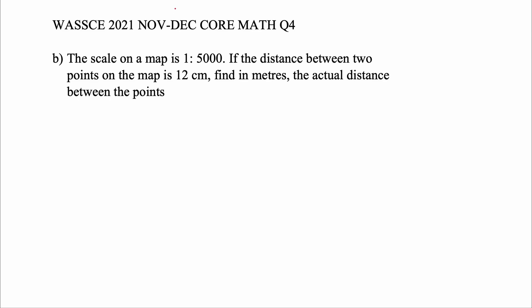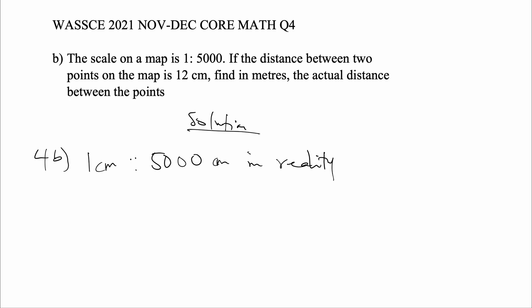The scale on a map is 1 to 5000. If the distance between two points on the map is 12 centimeters, find in meters the actual distance between the points. So on the map, 1 centimeter is equal to 5000 centimeters in reality. So 1 centimeter on the map is equal to 5000 centimeters actual distance. If the distance between two points on a map is 1 centimeter, then the actual distance will be 5000 centimeters.